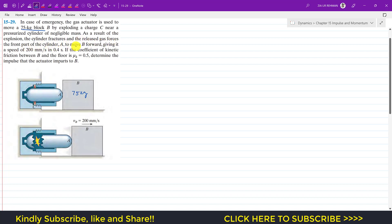The cylinder explodes and applies force on block B in this direction, giving it a speed of 200 mm per second in 0.4 seconds. Let's say this is the force F applied by the explosion.